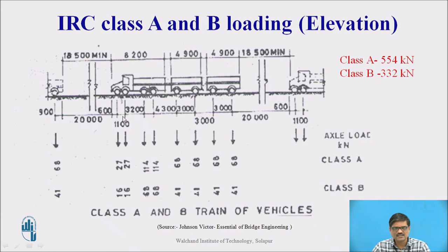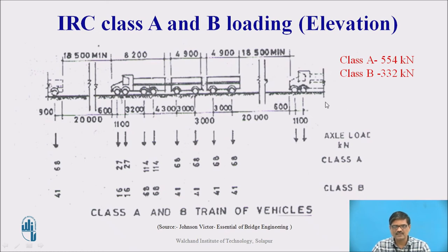The minimum clear distance between successive vehicles is 18.5 meters. The total load of class A is 554 kilonewton.